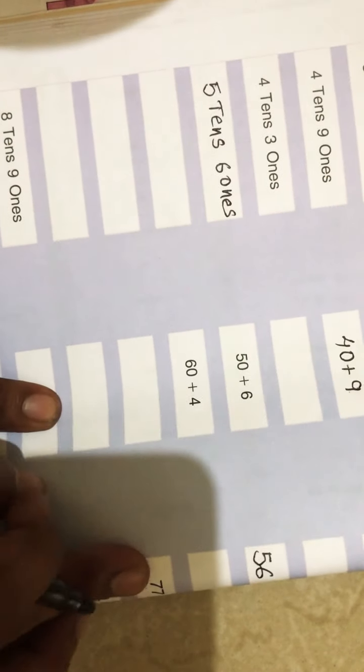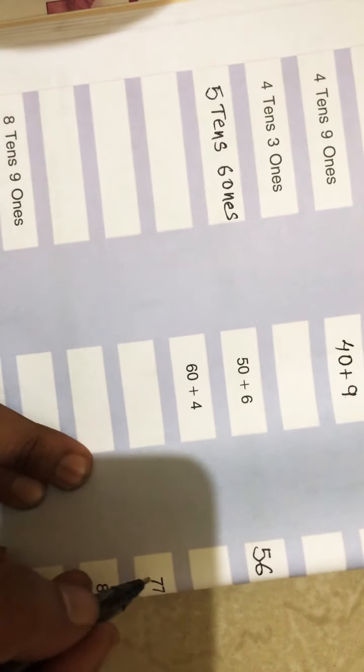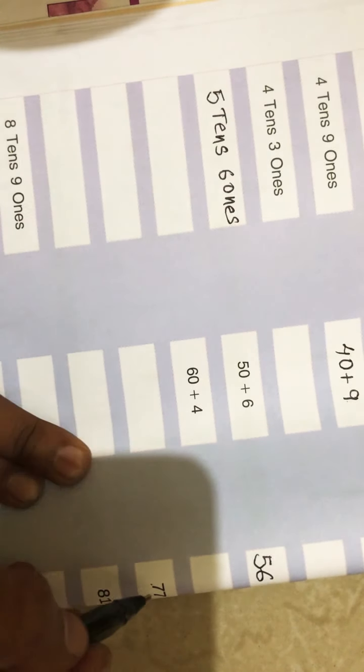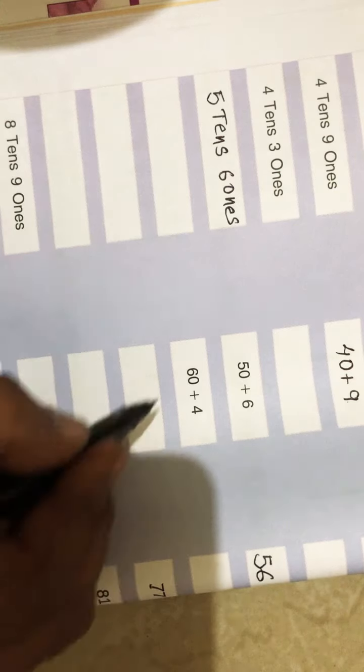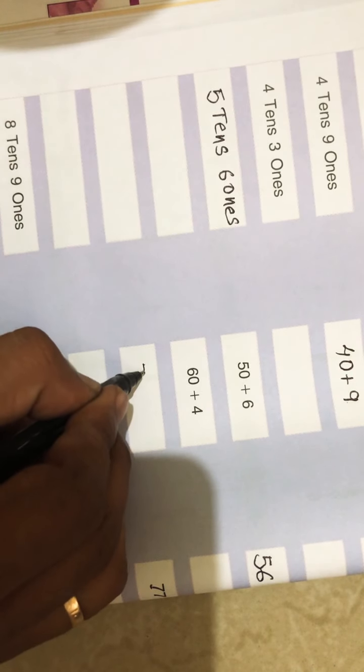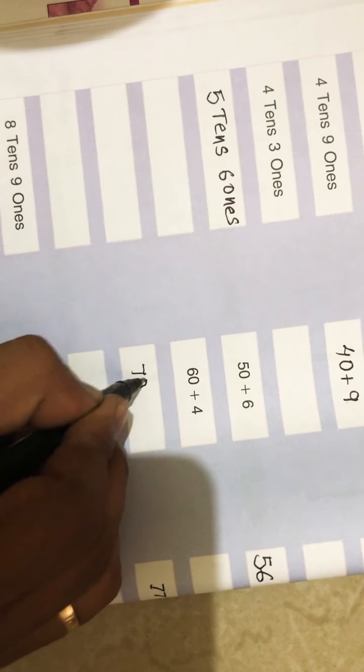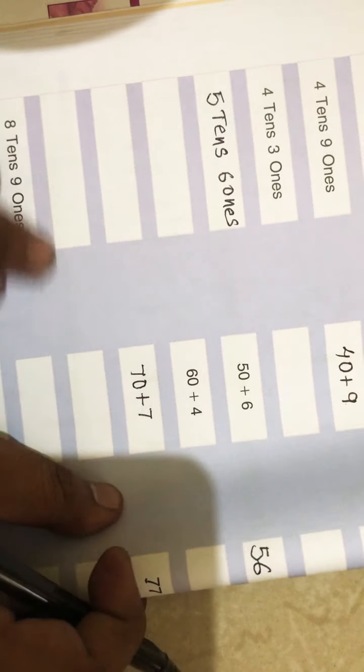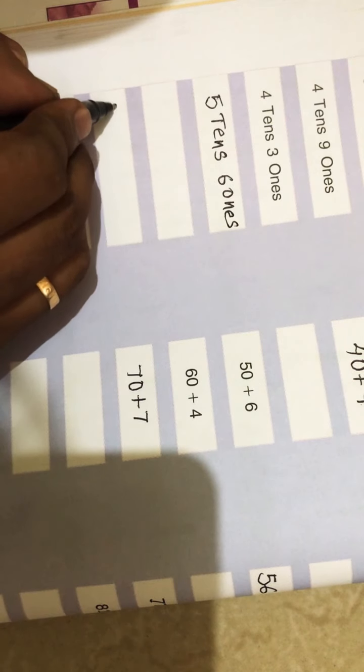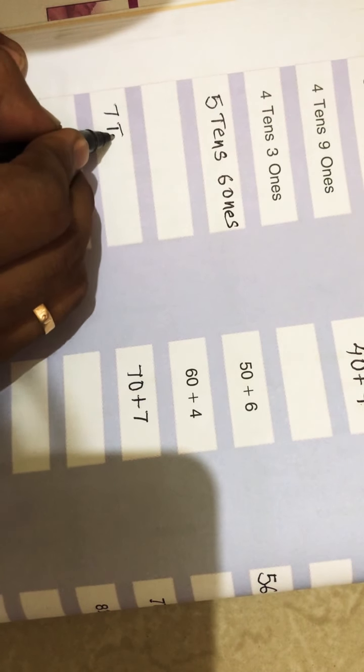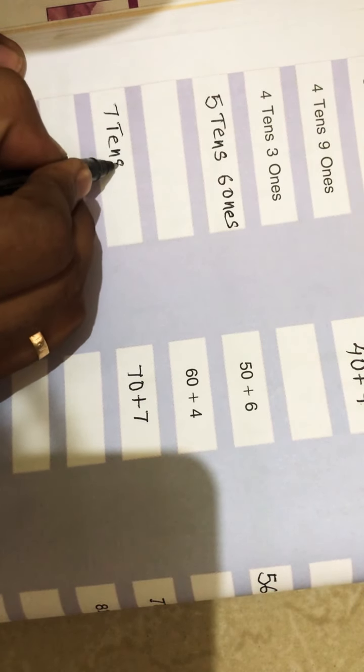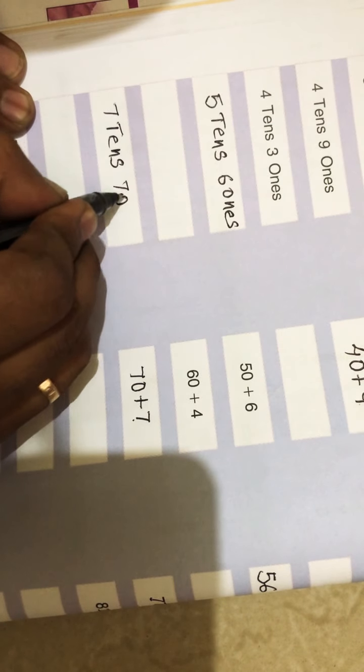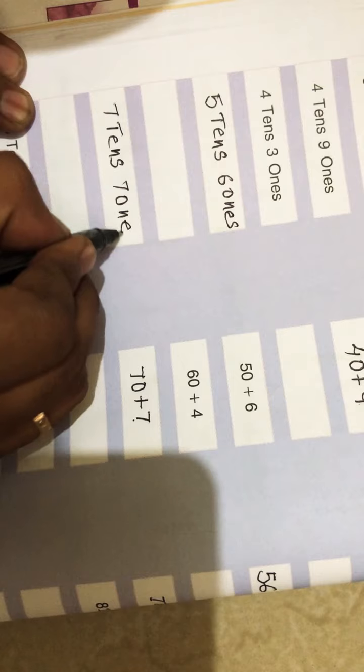So this one we will do. Now see 70. Seven tens, tens place value 70. At tens place seven, ones place seven. The answer will be 7 tens and 7 ones.